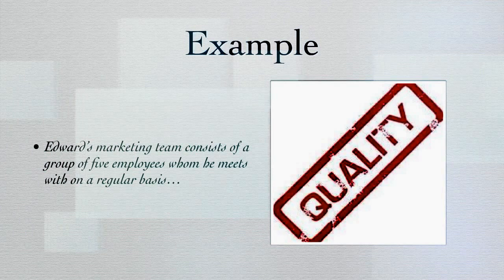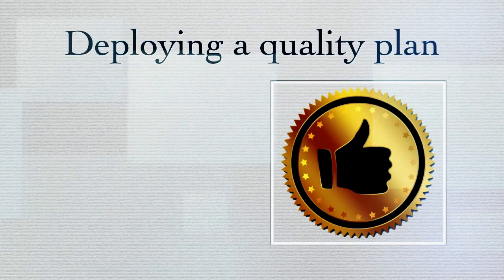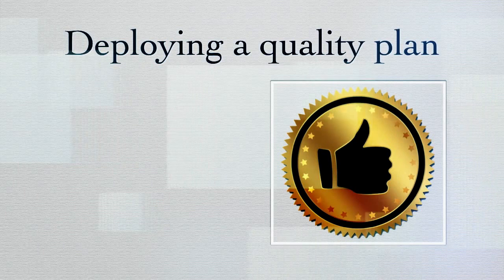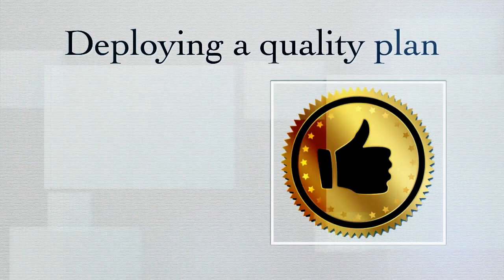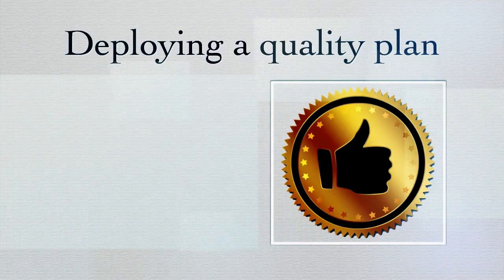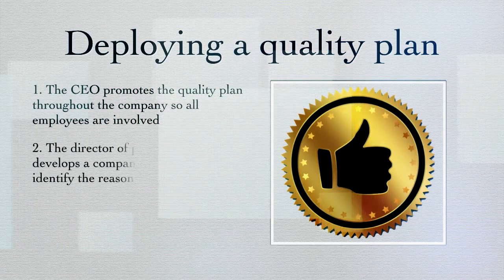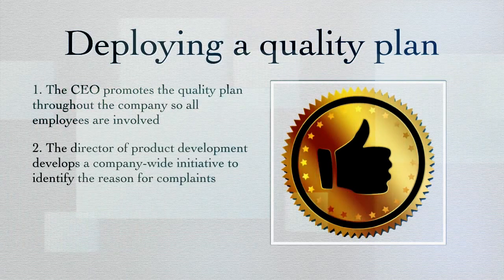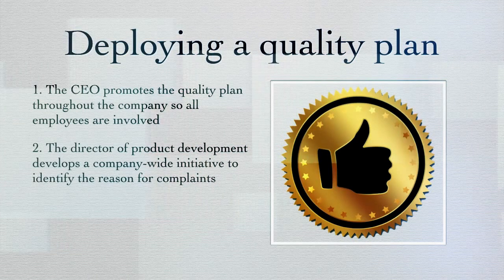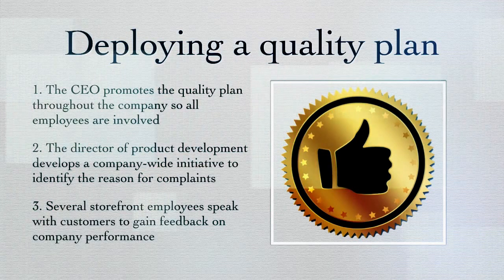Now let's try an exercise to see if we can recognize all the roles involved in quality management implementation. A small, locally owned and operated retail company has been receiving an increased number of customer complaints about one of its products and wants to deploy a quality plan to address this issue. It's up to you to identify examples of the roles involved in deploying a quality plan. Option one: the CEO promotes the quality plan throughout the company so all employees are involved. Option two: the director of product development develops a company-wide initiative to identify the reason for complaints. Option three: several employees speak with customers to gain feedback on company performance.